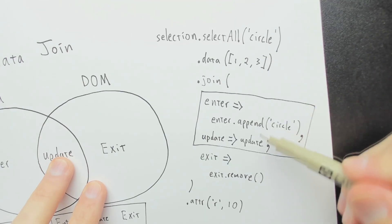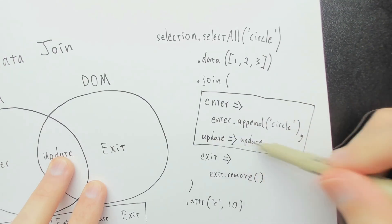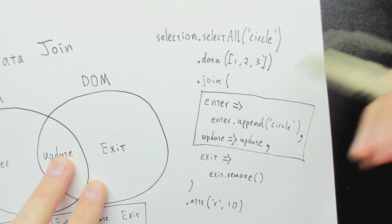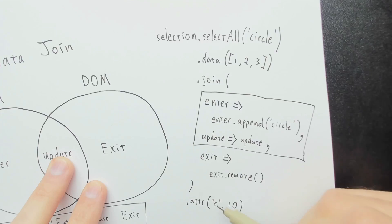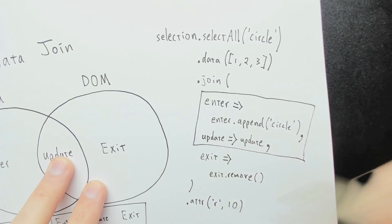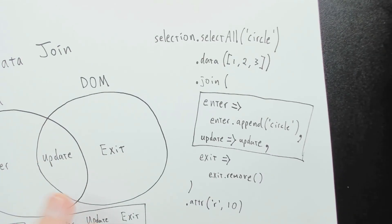So when this code runs again, it'll trigger just the update selection. It'll return that selection containing the three circles that were returned by select all, and it will set the R attribute on all of those. Again, to be the same thing, so it won't actually do anything.